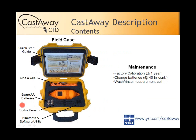The field kit follows general YSI philosophy — trying to give you everything you need in one kit. It includes the Castaway and the jacket, a line with a carabiner for casting from the top (50 feet, roughly 15-17 meters), enough for a shallow water cast. There's a quick-start guide and a user manual included on the USB. There are four AA batteries — two go inside, two are spares.